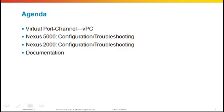Thank you, Dan. Welcome, everyone. In today's agenda, we will be covering Virtual Port Channel, Nexus 5000, and the Nexus 2000 series. I'll just quickly mention the wording I'll be using. You'll see me using Nexus 5000, 5000, or 5K. And for the 2000, you'll hear it referred to as Nexus 2000, 2K, fabric extender, or FEX. I'll mainly use the FEX term.